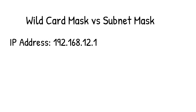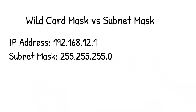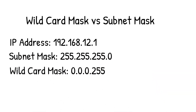If you're comparing a wildcard mask to a subnet mask, let's assume we have an IP address of 192.168.12.1. By default, our subnet mask would be /24 or 255.255.255.0. Everywhere we see a one in our subnet mask — the first three octets — those bits matter. But with a wildcard mask, everything is the complete opposite: our mask would be 0.0.0.255. Everywhere you see a zero in the wildcard mask, those bits matter. The fourth octet has 255, meaning those bits are ones and don't matter.